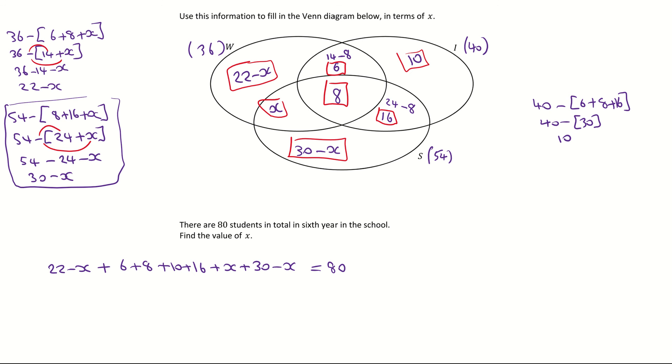If I add up the 22, the 6, the 8, the 10, the 16 and the 30, that makes 92. I then group the x's. I have a minus x. I have a plus x. That makes zero. They cancel. And then I have a minus x. So on the left hand side, I have 92 minus x is equal to 80. I need to then subtract 92 from both sides.